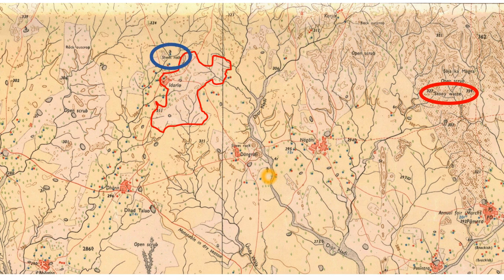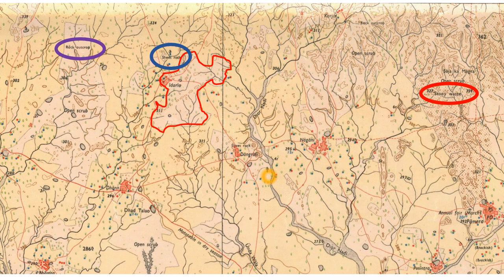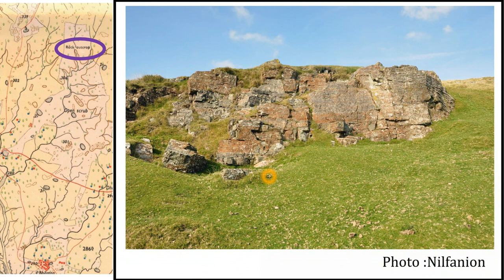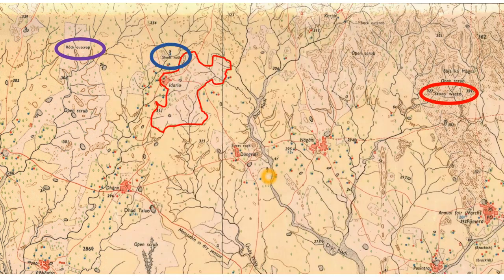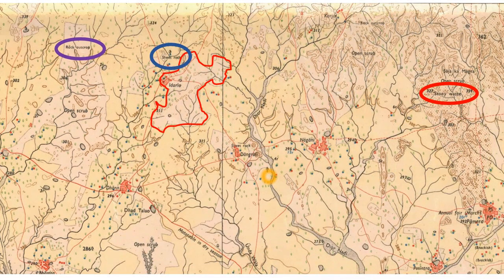Sheet rock is a large area with a huge sheet of rock exposed to the surface. Rock outcrop is a part of rock getting exposed to the surface due to weathering. These three rock features — sheet rock, rock outcrop, and stony waste — are all shown in the white colored area, meaning they are not suitable for cultivation. Other than these rocky features, we have open scrub in the map, which is an area with only shrubs and bushes, not suitable for cultivation.